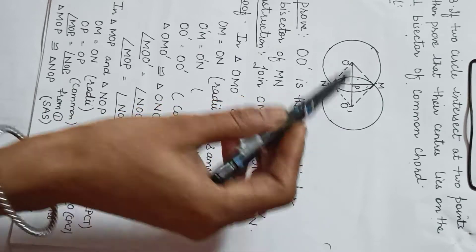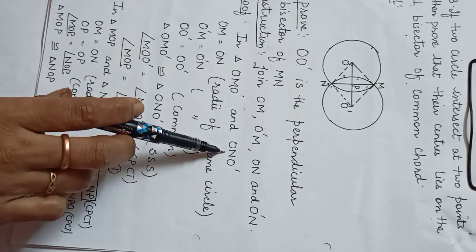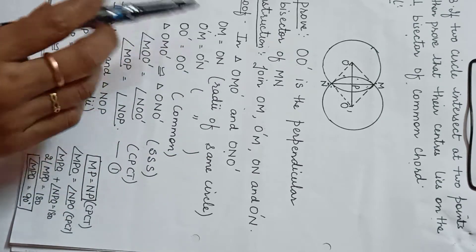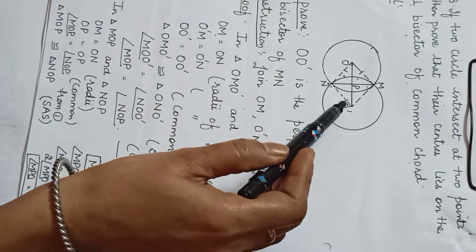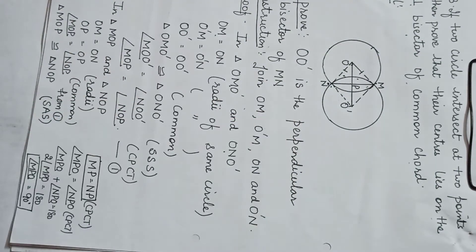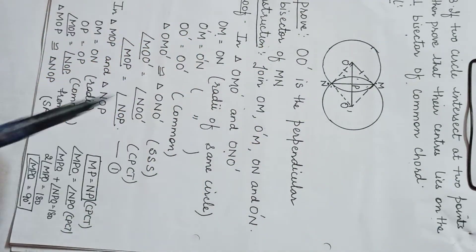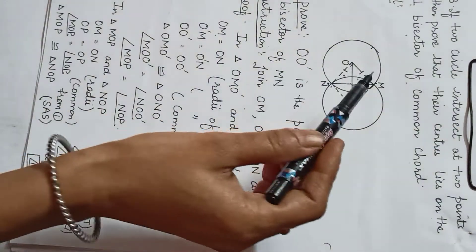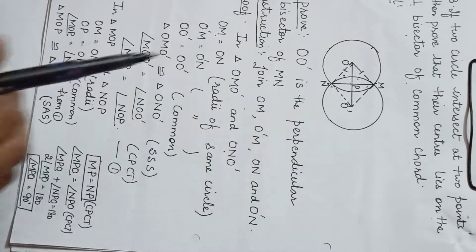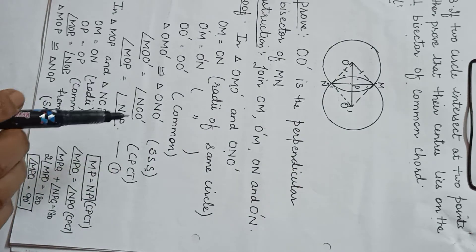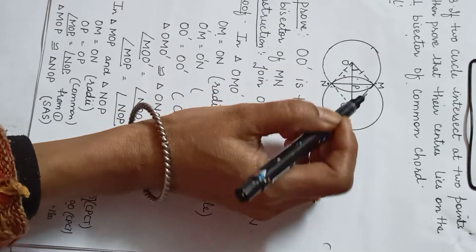In triangle OMO' and ONO': OM equals ON — these two are equal — and O'M equals O'N, as they are the radii of the same circle. OO' is common. So by SSS, triangle OMO' and ONO' are congruent by SSS.